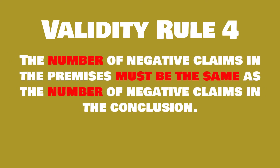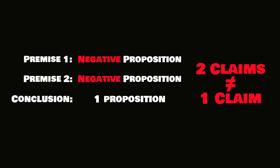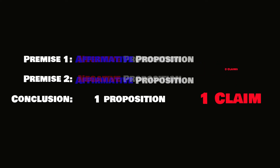Rule four: the number of negative claims in the premises must equal the number of negative claims in the conclusion. The conclusion is always a single claim, which implies the conclusion cannot be valid if there are two negative premises. Two negative premises equal two negative claims. It also implies you can't get a negative conclusion from two affirmative premises. All we have to do is add up our negative premises and make sure we have the same number of negative conclusions.